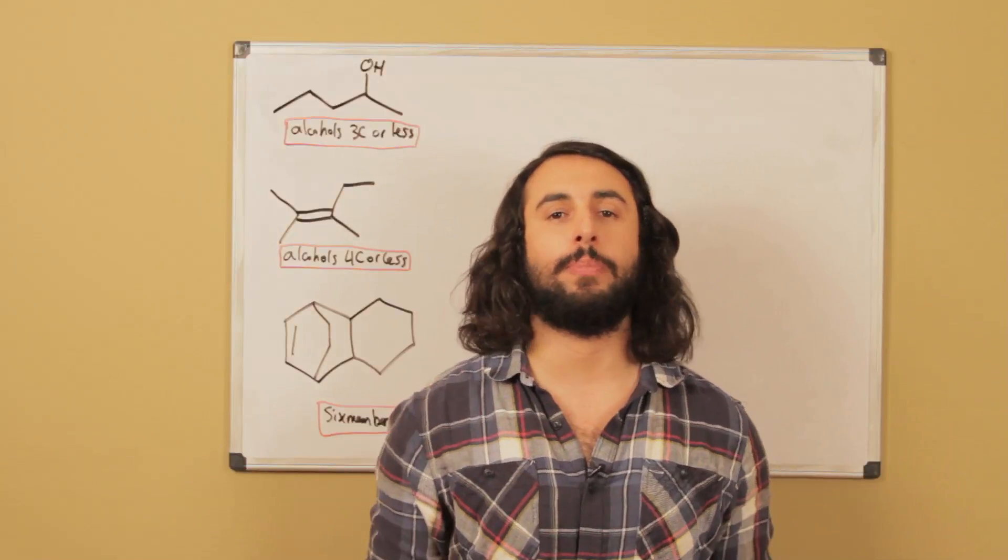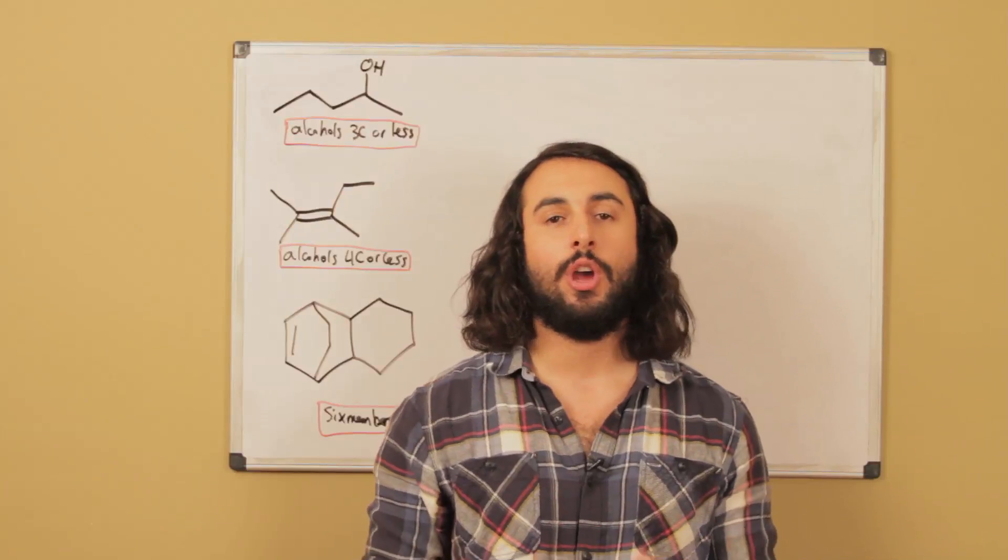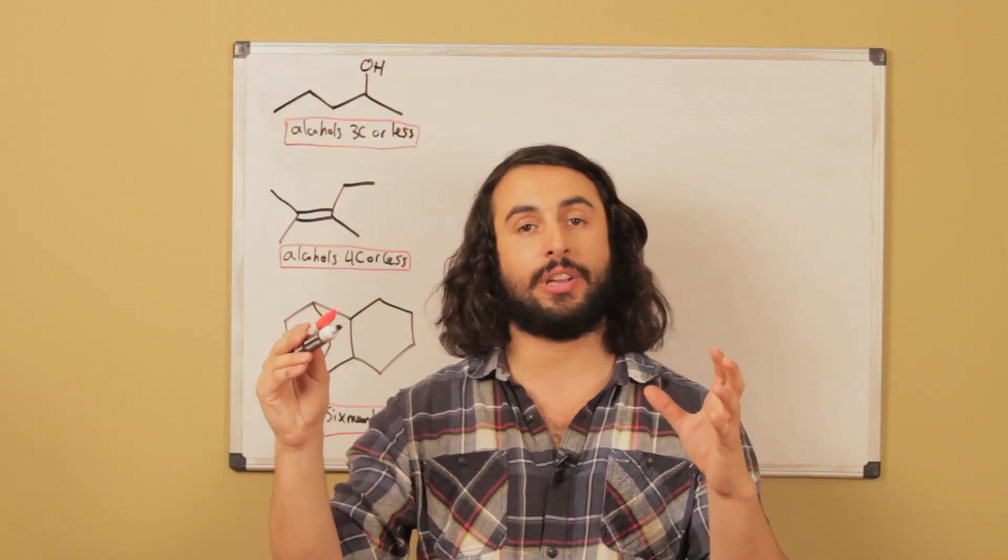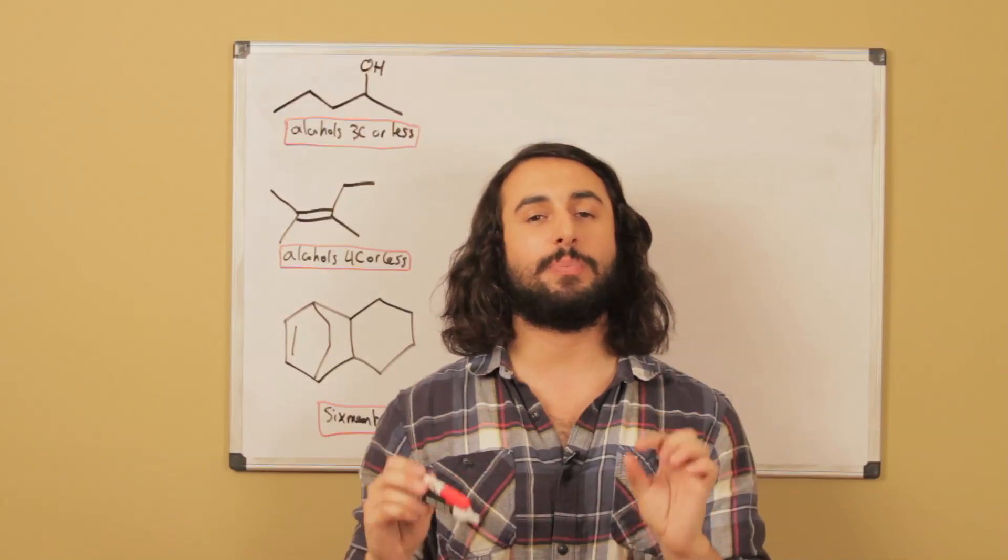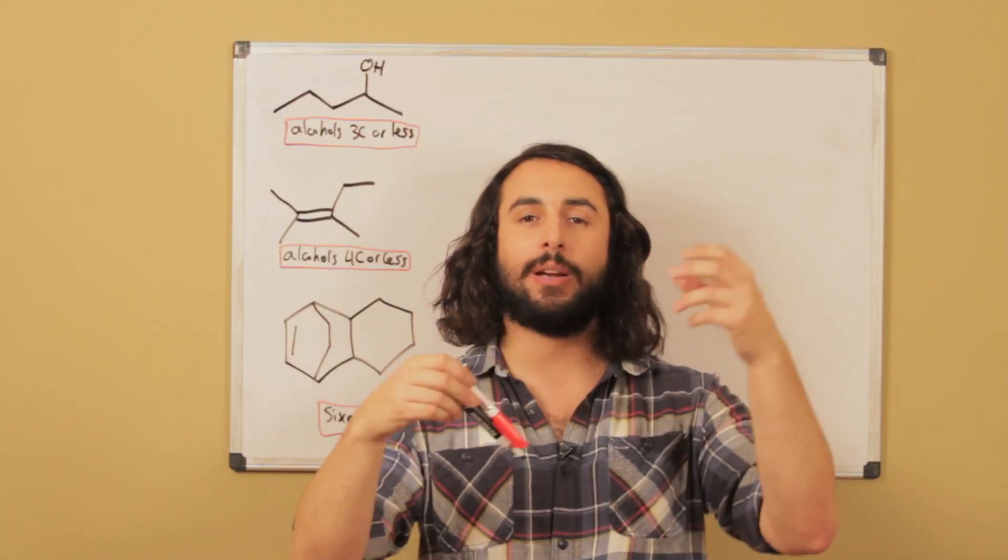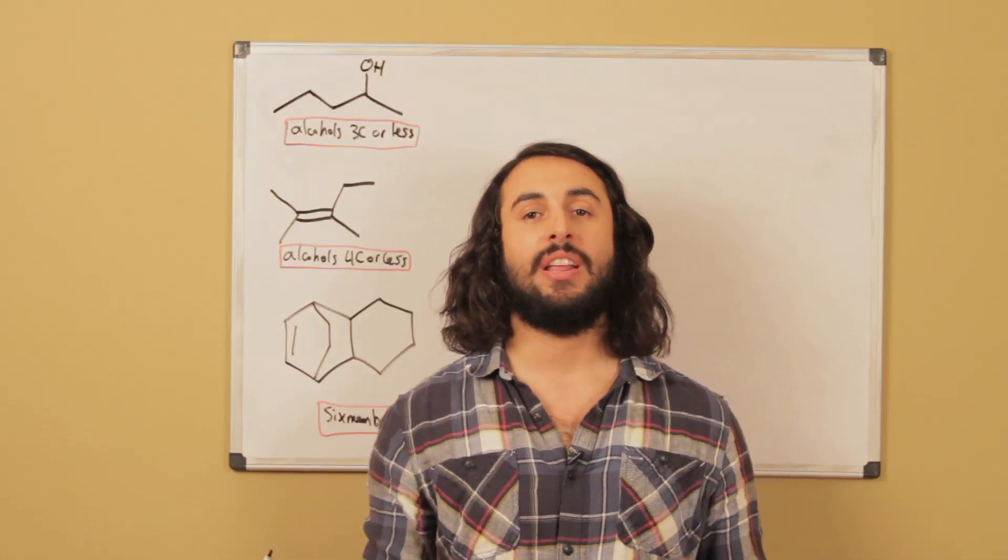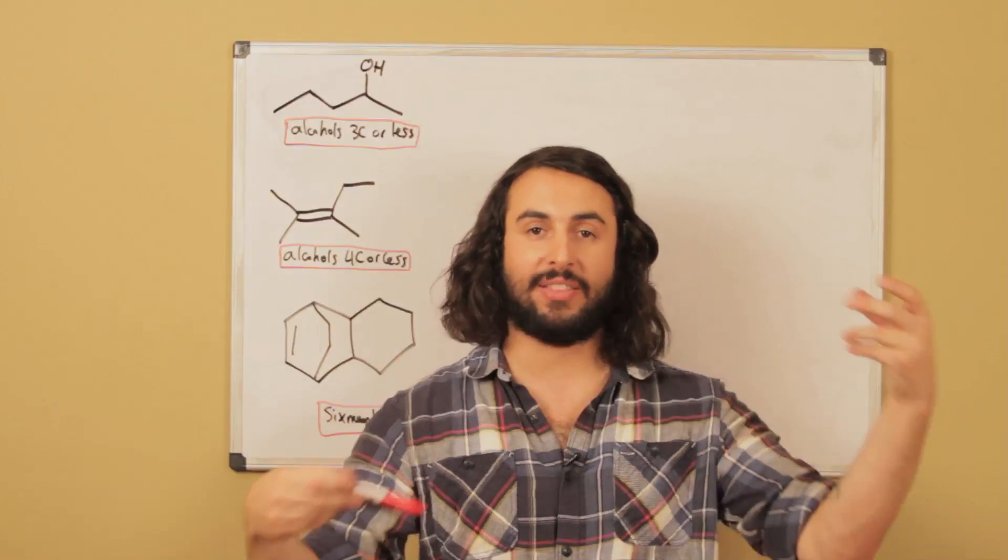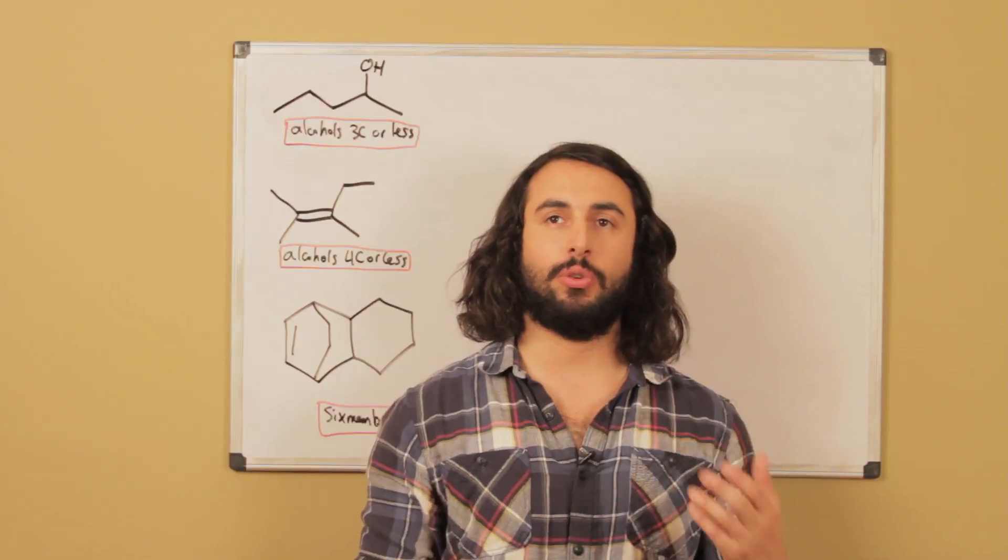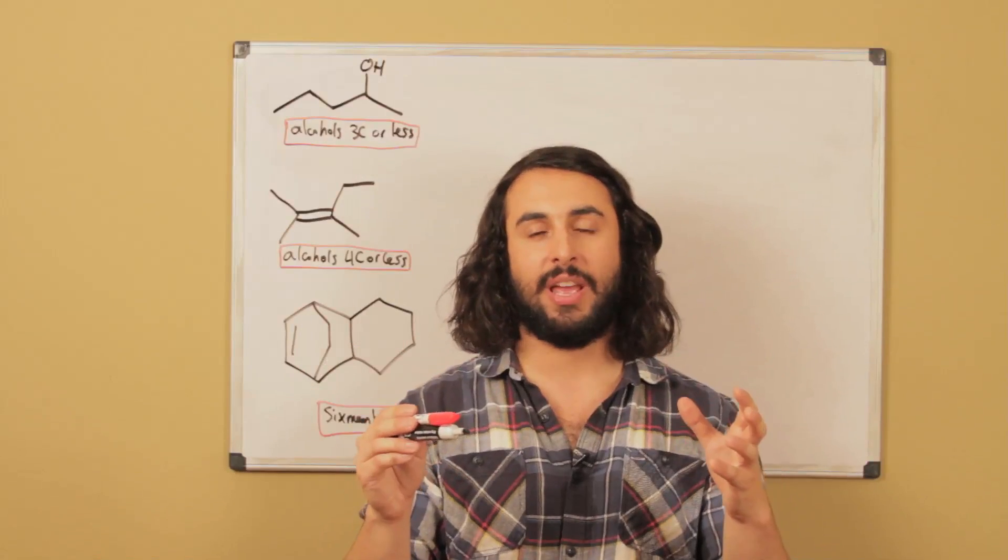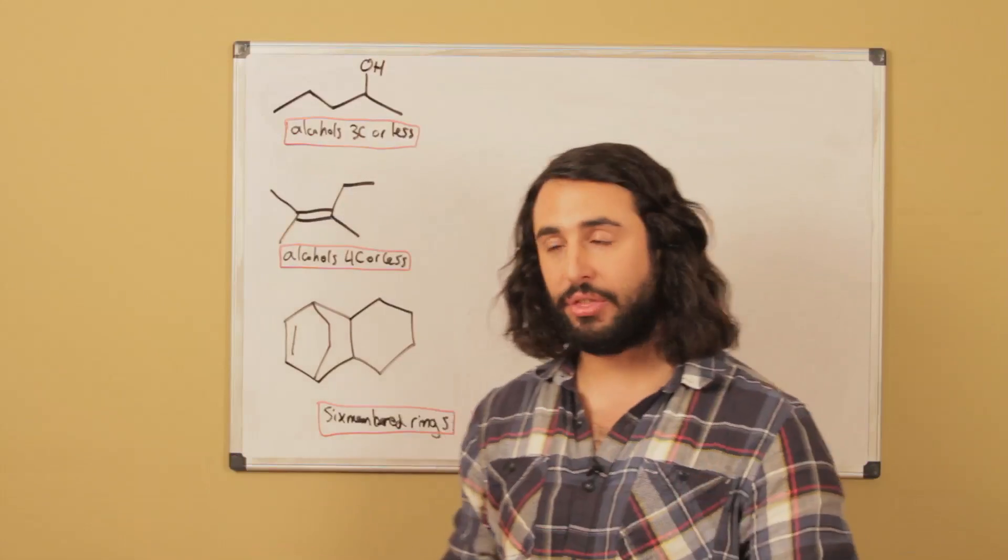Instead of starting with some arbitrary molecule and trying to think what can I do to get to the target molecule, we start with the target molecule and very selectively break it apart into smaller pieces in specific ways. We only break it apart in a way that is feasible because we know there is some reaction that will put it back together exactly as we pulled it apart. To do this, we look at the functional groups on the target molecule and think of what kinds of reactions can generate those functional groups. I've drawn three examples here.